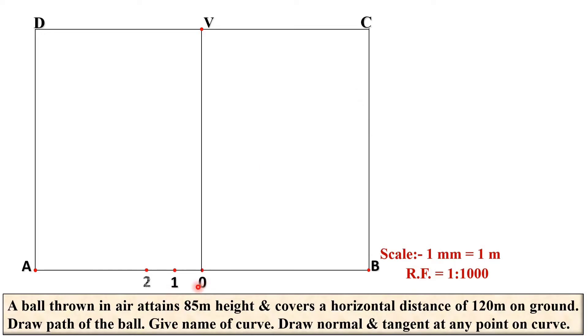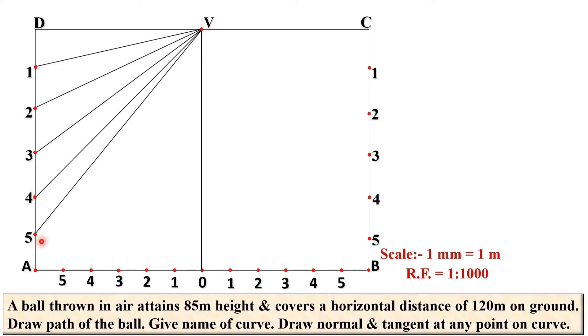Now divide this distance 0 to A into 4, 5, or 6 equal parts; that depends on you. Here I have divided it into 6 equal parts. Similarly on this side, we have divided 6 equal parts. Next, definitely you have to divide this distance into 6 equal parts also, and same way here 6 equal parts. Now join V1, V2, V3, V4, and V5. Similar way on this side.